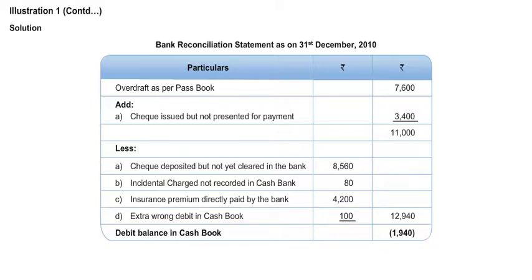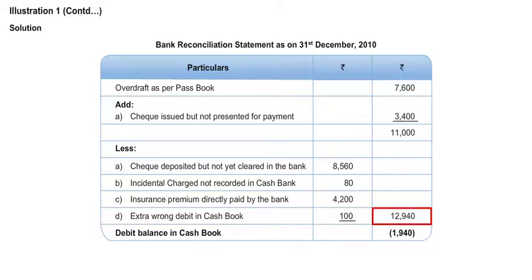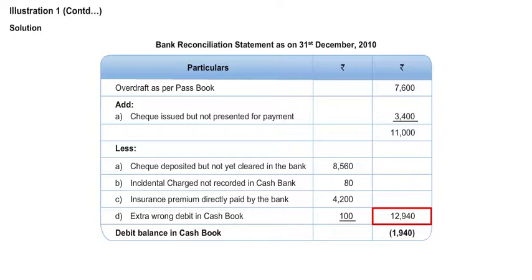These are the effects of all the different entries. Now 7600, with only one item in the add category: plus 3400. All four other amounts are to be deducted — that is 12,940. So your final balance calculation is: 7600 plus 3400 minus 12,940 equals negative 1,940.